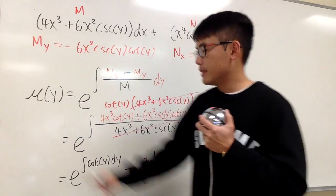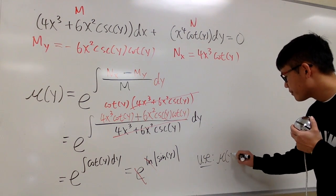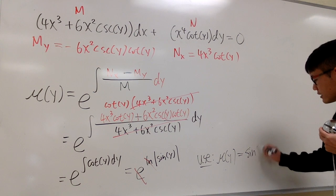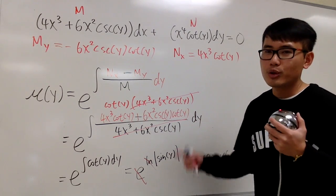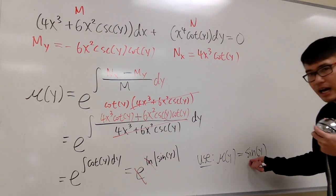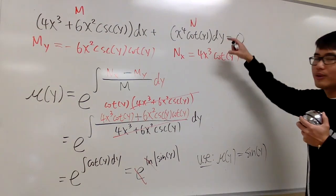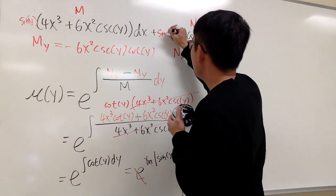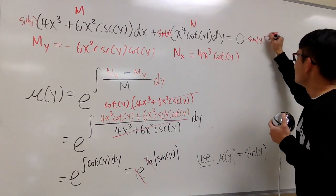We have mu of y equal to the absolute value of sine of y, but we don't worry about the absolute value — we just need the function part. So let's use mu of y as sine of y. This is all we need. You don't worry about the absolute value and you don't worry about plus c in integrating factor problems. We'll take sine y and multiply everything in the original equation by it.